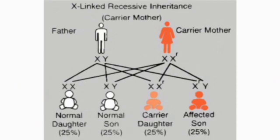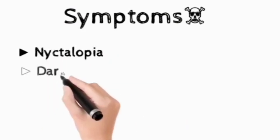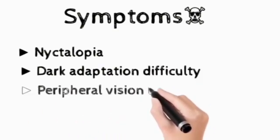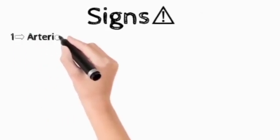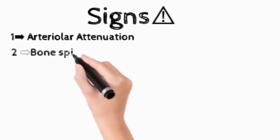Symptoms of RP: nyctalopia, dark adaptation difficulty, peripheral vision loss. Signs: arteriolar attenuation, bone spicules, waxy pallor disc, reduced contrast.